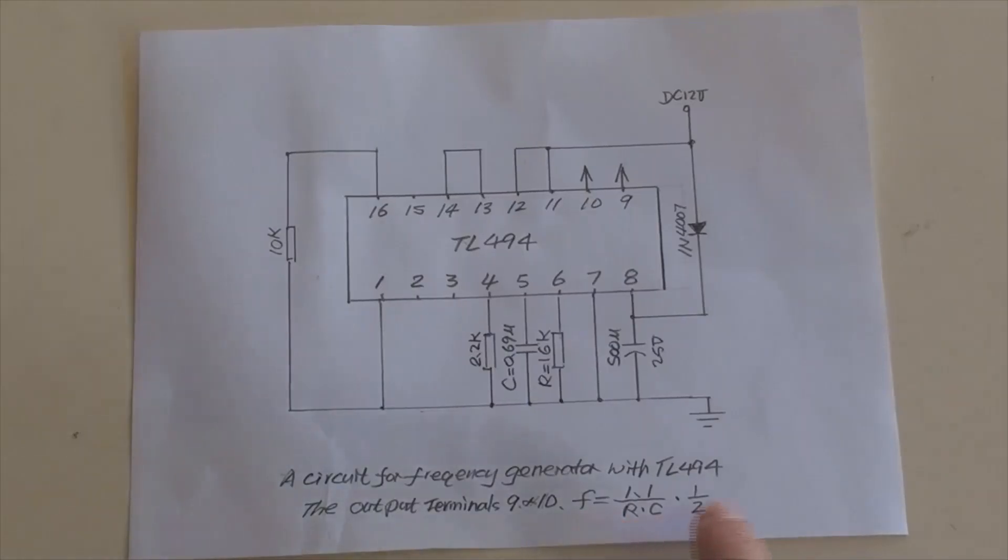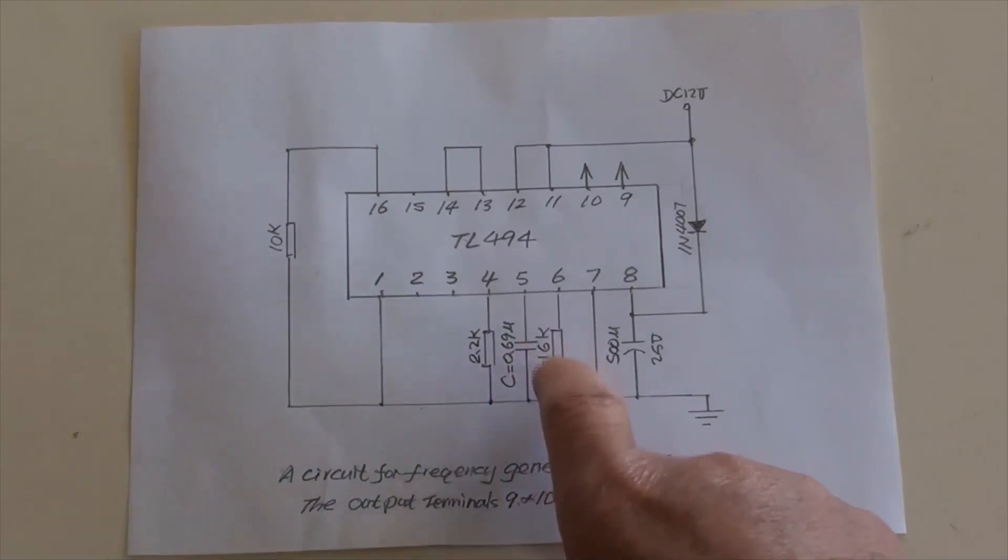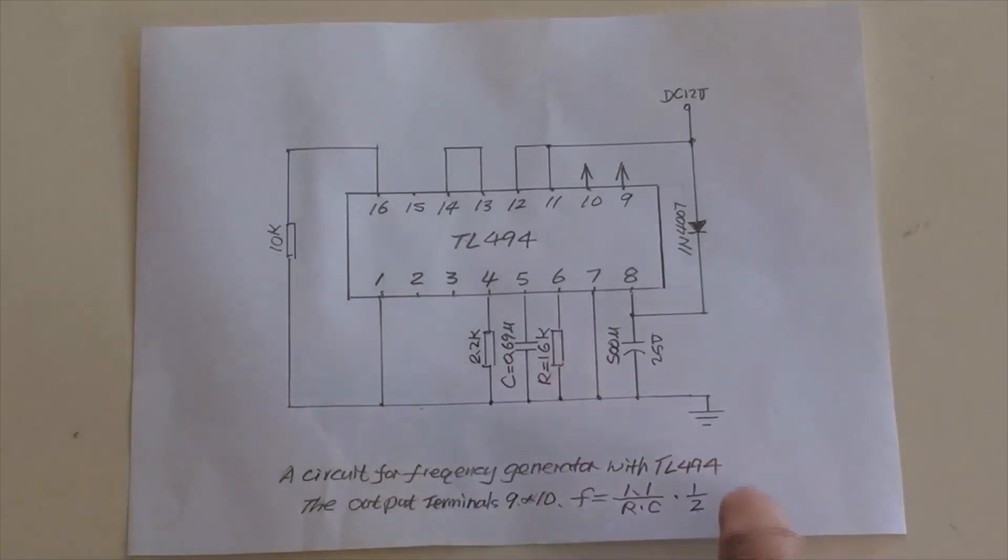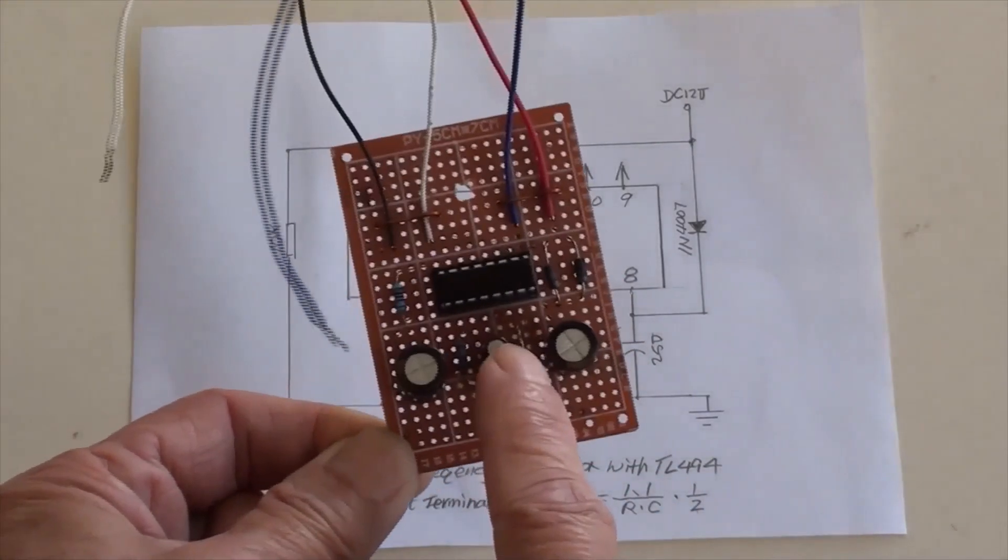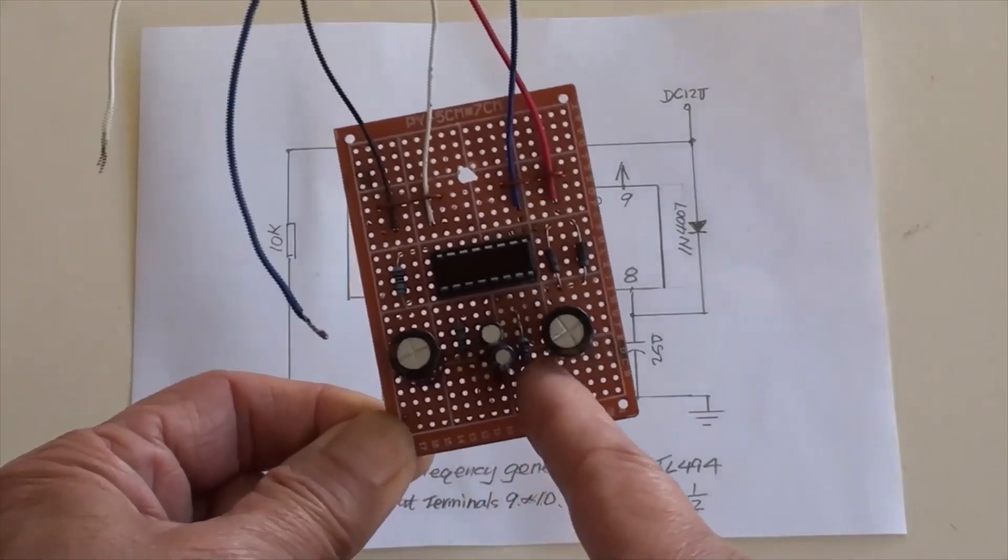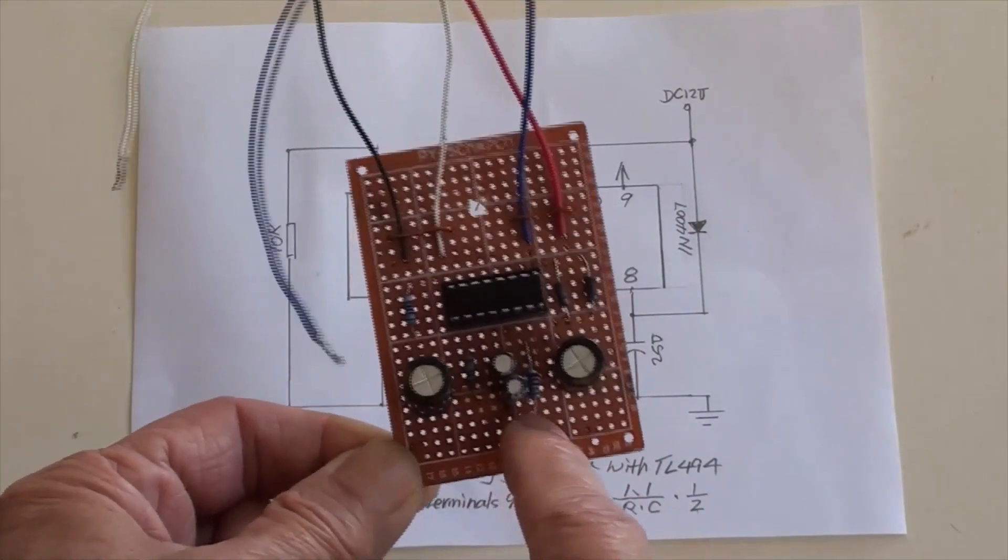Incidentally speaking, this formula is for the oscillator's frequency calculation. It is determined by the 16k ohms resistor and 0.69 microfarad capacitor in this case. So the oscillator's frequency is 50 hertz.